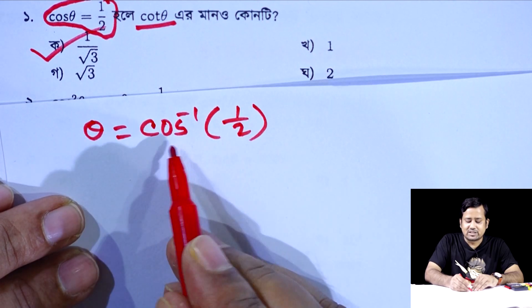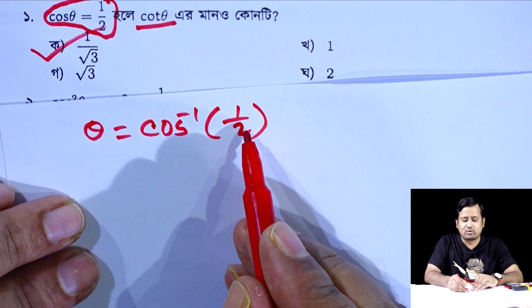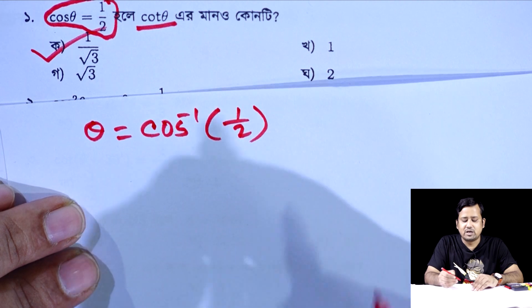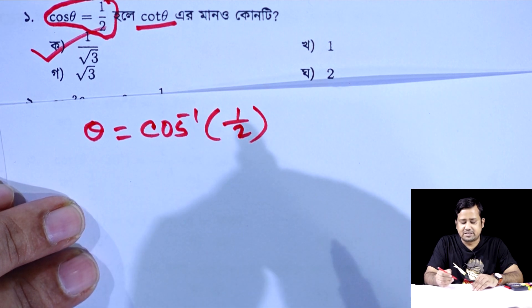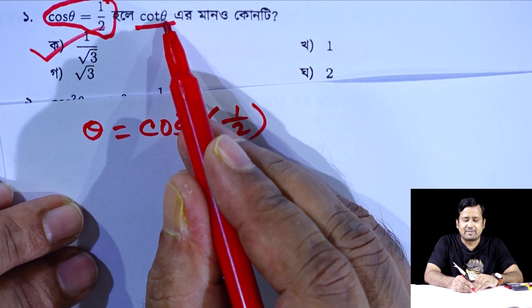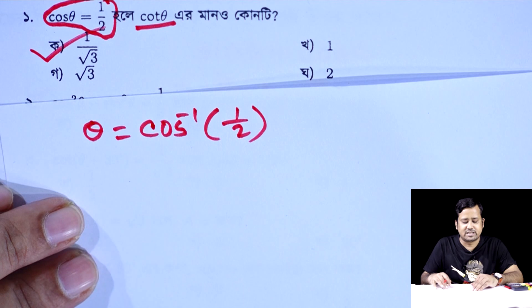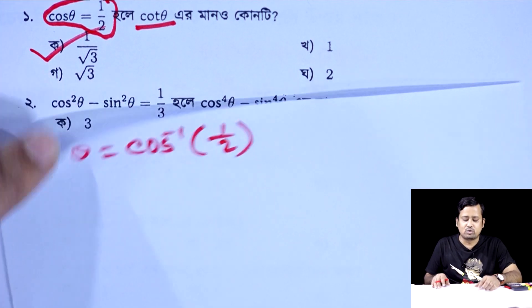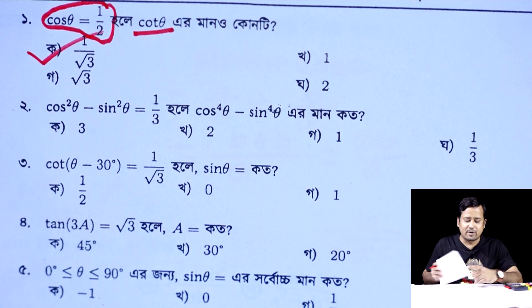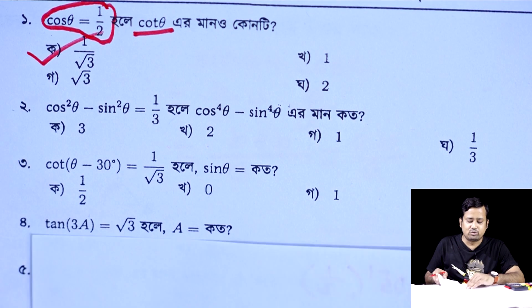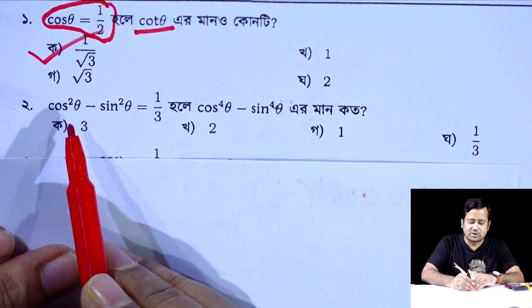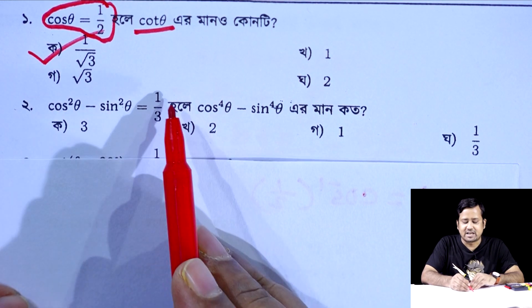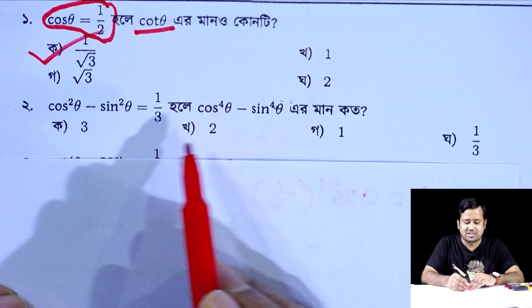The calculator gives us the inverse of half. The inverse of half is equal to 60 degrees. Also, the inverse of half is equal to 1 by root 3. Therefore, the inverse half is equal to 1 by 3.